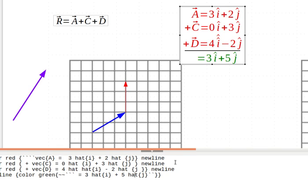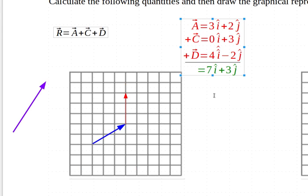And if I add all that up, I would have 3 plus 0 plus 4, which is 7, and 2 plus 3 minus 2, which would give me 3. So that's what I would expect to get if I added all three vectors.